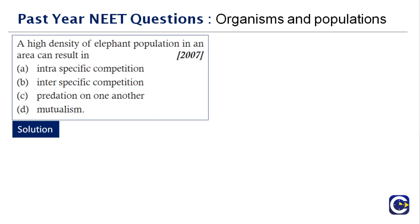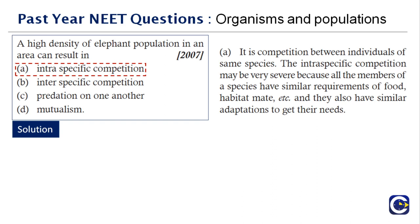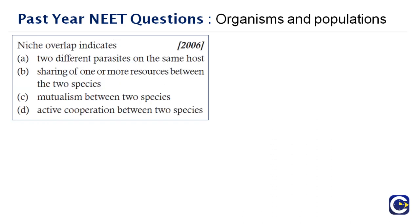Next question: a high density of elephant population in an area can result in — intraspecific competition occurs when there is competition within the same population. When there is a large number of elephants and some drought or shortage of food, competition prevails among themselves. Since it happens within the same species, you call it intraspecific competition. The right answer is option A.